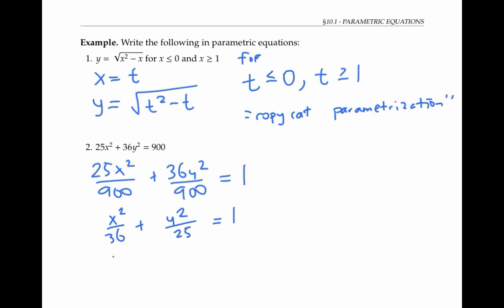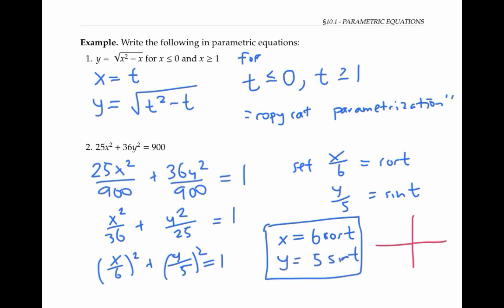If I rewrite this as x over six squared, plus y over five squared equals one, then I can set x over six equal to cosine of t, and y over five equal to sine of t. And I can see that for any value of t, x over six and y over five will satisfy this equation simply because cosine squared plus sine squared equals one. This gives me the parameterization x equals six cosine of t, y equals five sine of t, which is a handy way to describe an ellipse.